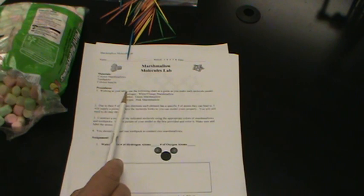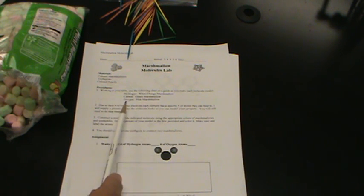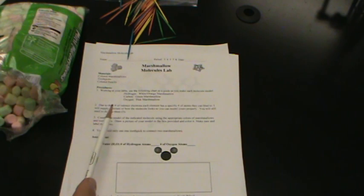In the instructions, working at your table use the following chart as a guide to make your molecule for each model. Hydrogen is the white or the orange marshmallows, in this case we happen to have yellow. Carbon green and oxygen are pink. Due to their number of valence electrons, each element has a specific number of atoms they can bind to. I'll supply a picture of the molecule so you can model yours appropriately. Construct a model of the indicated molecule using the appropriate colors of marshmallows and toothpicks. Draw a picture of your model in the box and color it.